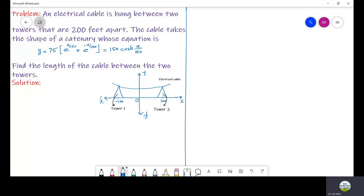The distance between the two towers is 200 feet. So on the right hand side we have 100 and on the left hand side we have minus 100. So the total distance between the towers is 200.